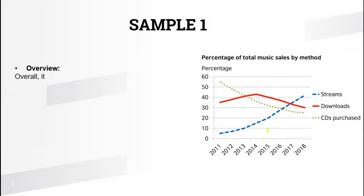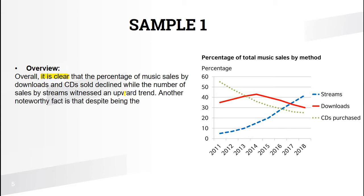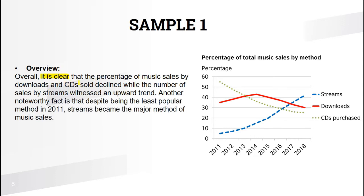Let's look at our first sample overview. 'Overall, it is clear that the percentage of music sales by downloads and CD sales declined, while the number of sales by streams witnessed an upward trend.' So with one sentence we've covered all three trends — downloads declined, CDs declined, and streams went up.